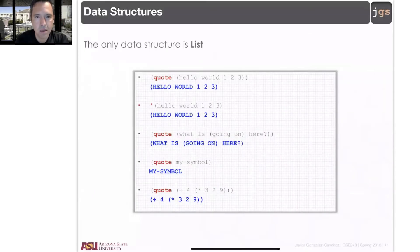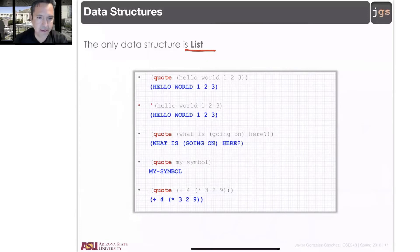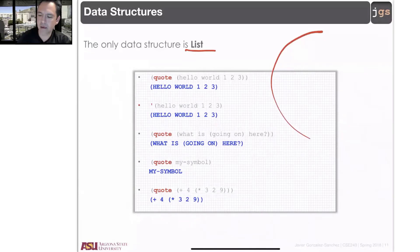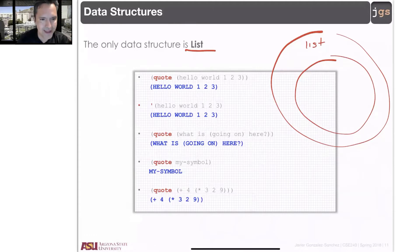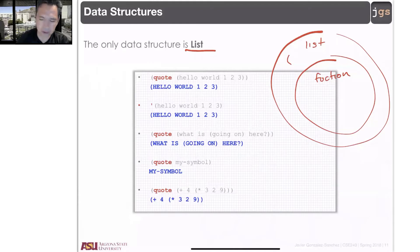Well, the only data structure that you have in Lisp is the list. Remember, everything is a list. In particular, one particular type of list is functions. Because the list is anything that starts with an open parenthesis and a closing parenthesis.